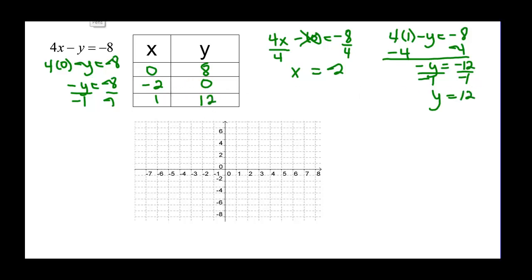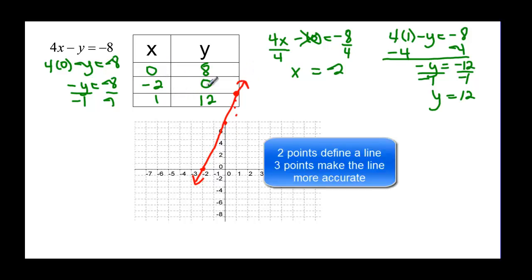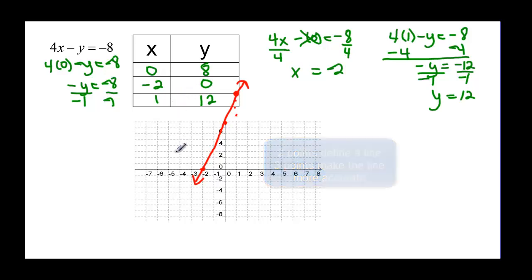So we ended up with y equal to twelve. Plotting our points: zero and eight — start at zero and go up to eight. Negative two and zero stays on the x axis — that's our x intercept. Zero and eight is our y intercept. And one and twelve — up to about twelve. Drawing the line through those points, we can see that looks about right. We've used the intercepts as two points to find the line, then found a third point to make the graph more accurate.